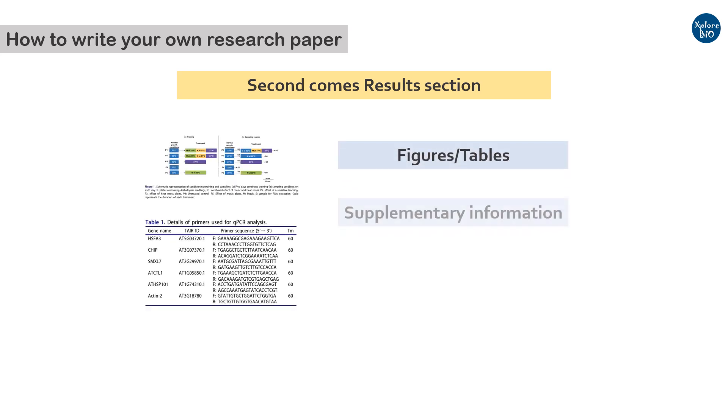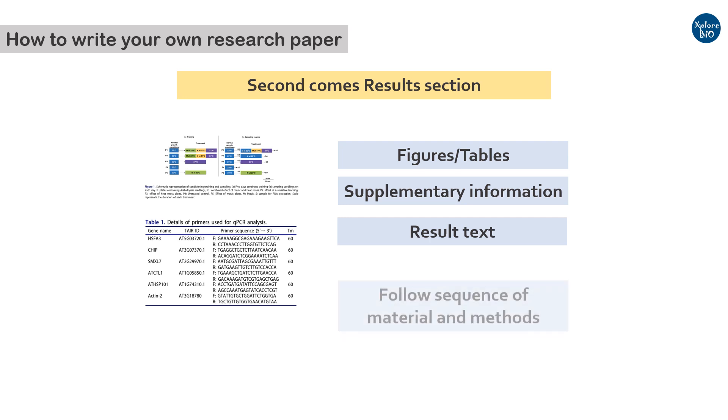Once finished writing materials and methods section, go for the results section. First, prepare and finalize figures, tables and supplementary information to be provided along with the paper. This will help you to know the visible outcome of your experiments. Then you may write the text of the results section.